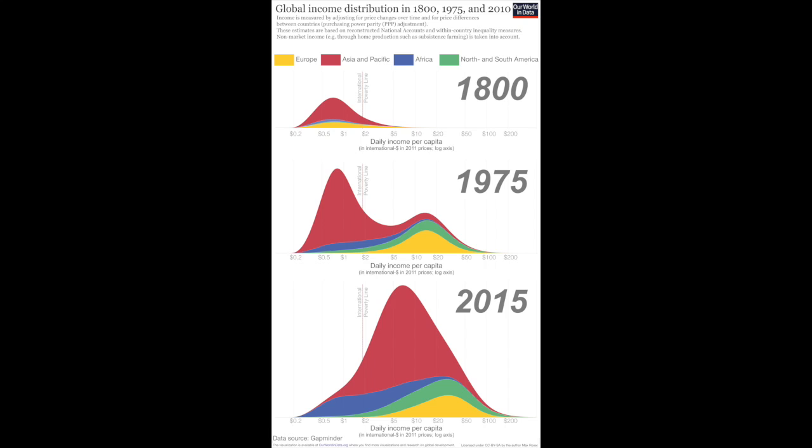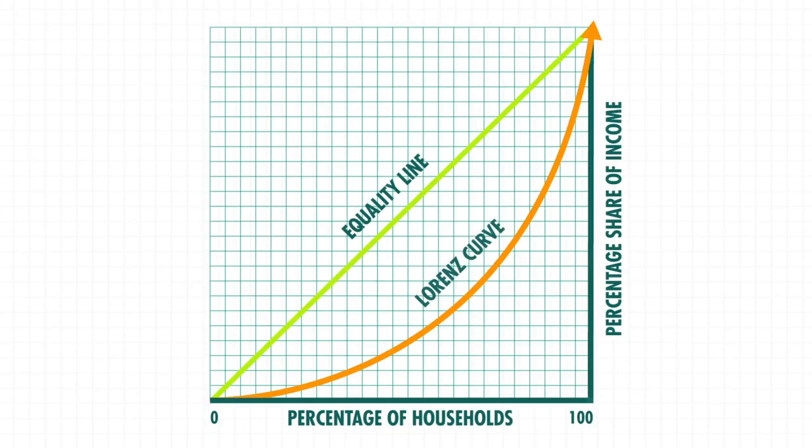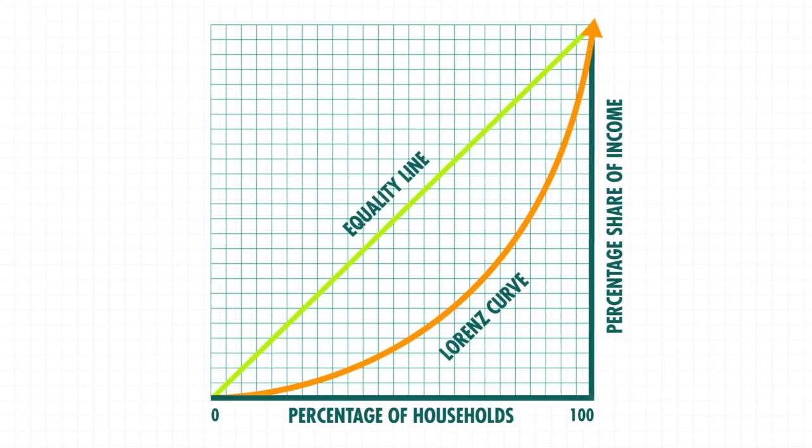Inequality is usually measured using the Gini index. The Gini index is a number from 0 to 1 calculated using the Lorenz curve and the equality line. A perfect score of 0 represents a society where all individuals have the same income, while a score of 1 represents a society where one individual accumulates all the wealth.